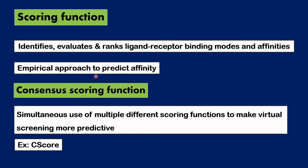It is an empirical approach to predict affinity — empirical approach means which is based on experimental values. We also have another term known as consensus scoring function. Consensus scoring function means when you are using more than one scoring function simultaneously. It makes predictions more accurate when compared to using a single function. An example is C score, which uses more than one type of scoring function.